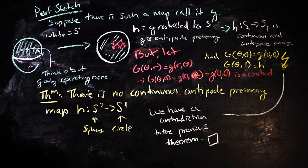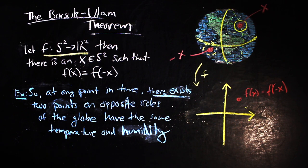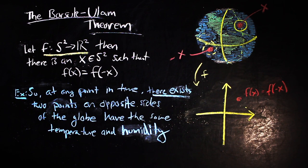This theorem actually allows us to prove the Borsuk-Ulam theorem for the sphere. Recall that the Borsuk-Ulam theorem says that for any continuous map from the sphere to the plane, there is a point on the sphere such that the image of f at that point is equal to the image of its antipode.